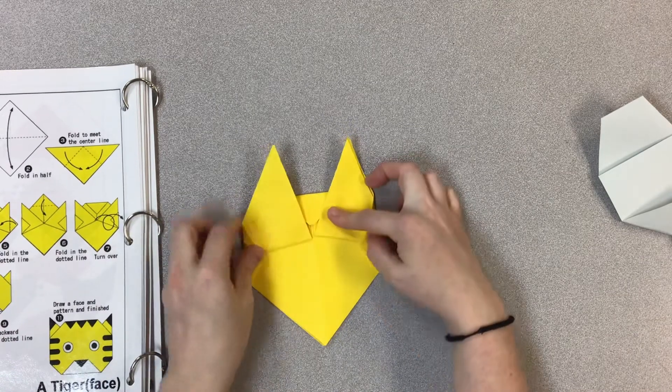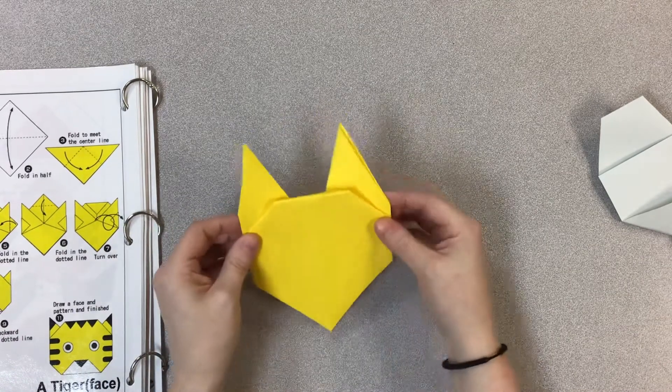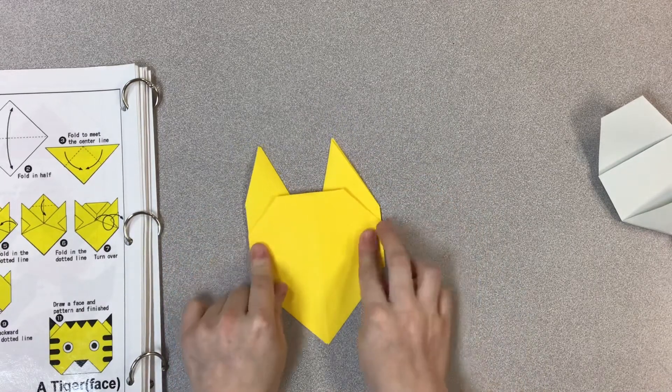Now I should be able to turn it over and it should look kind of more like a tiger, or some kind of cat.